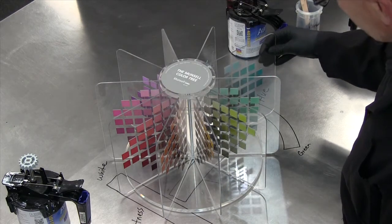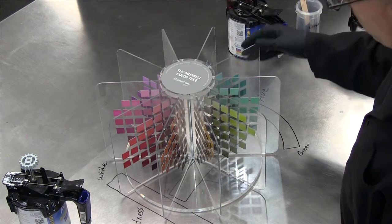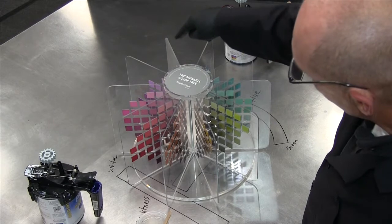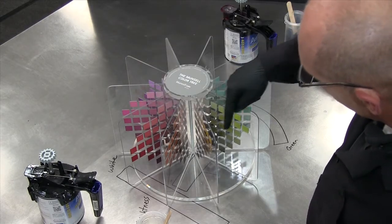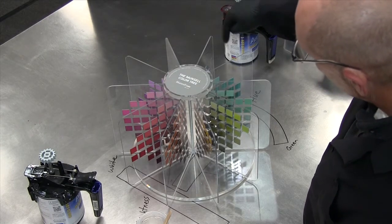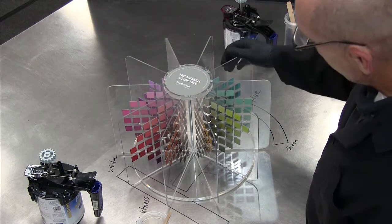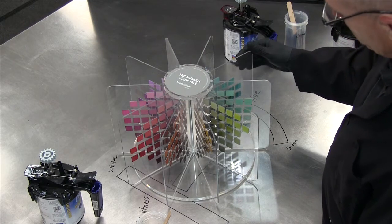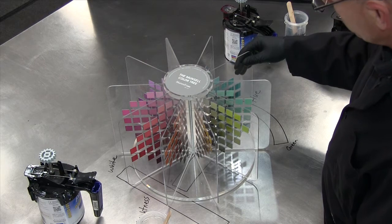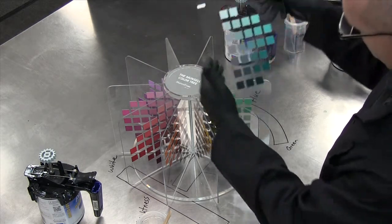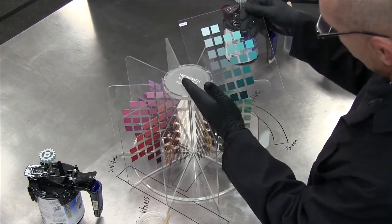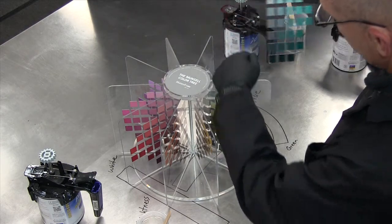The third dimension would be hue. Hue describes color as either being blue, red, yellow, or green. Blue, red, yellow, and green are the four primary colors that we're going to talk about. So once again, lightness, saturation, and hue.